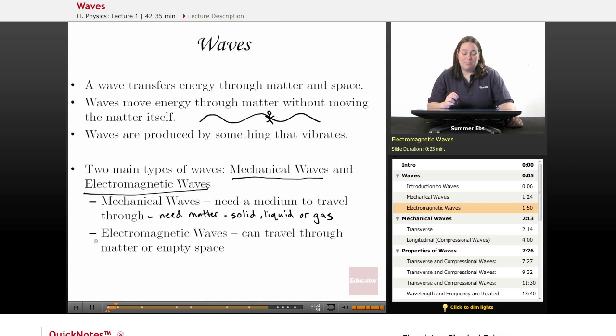Electromagnetic waves, the second main type, can travel through empty space and travel best through empty space. They can also travel through matter but move more slowly through it. Mechanical waves must have matter and travel best through matter, while electromagnetic waves travel best through empty space.